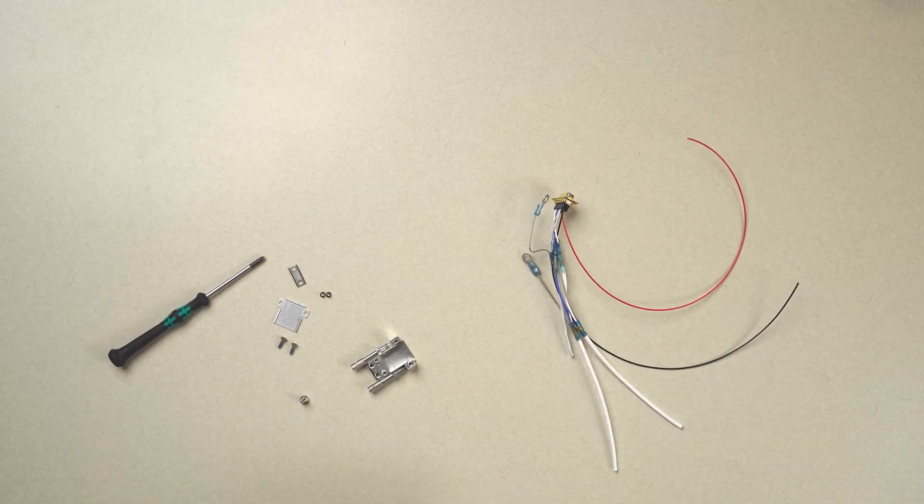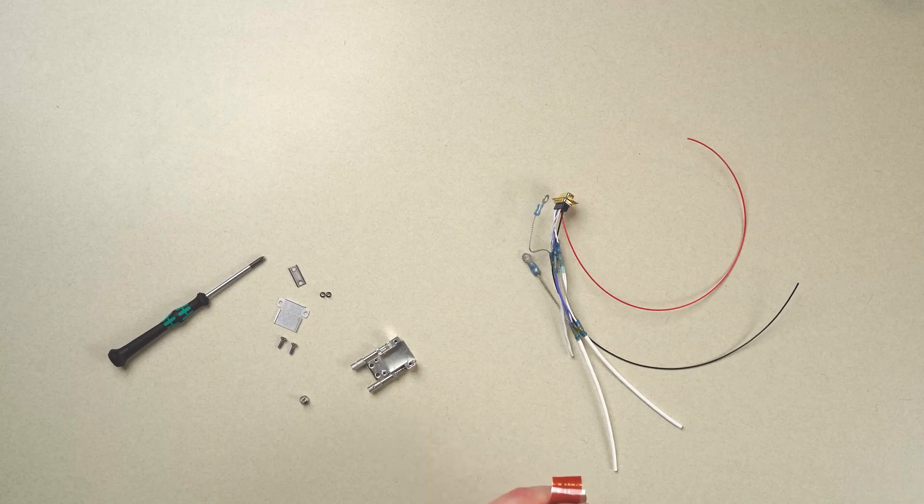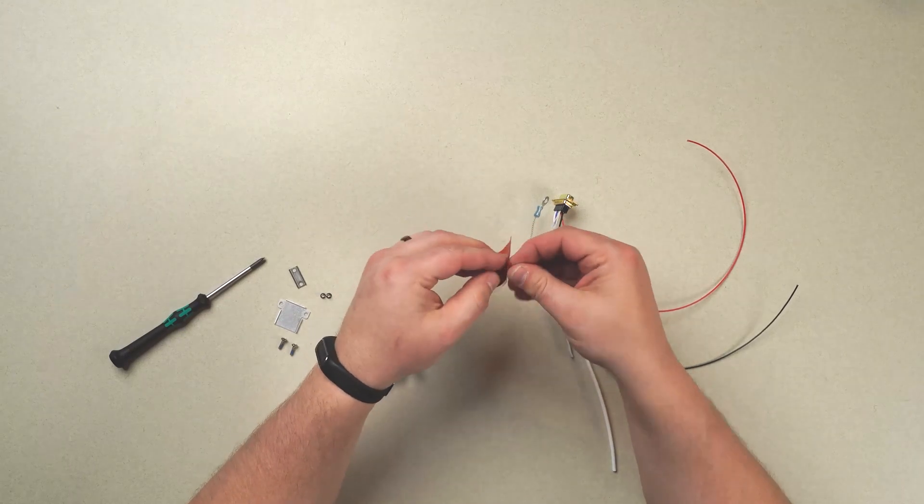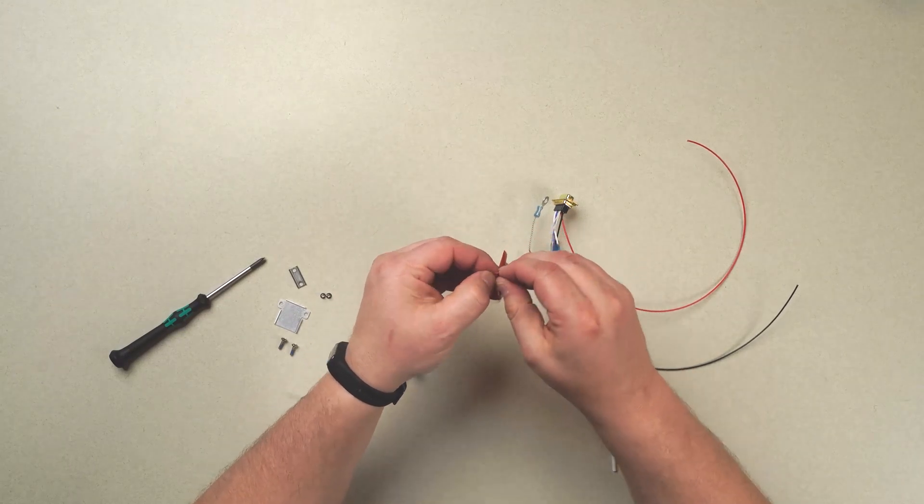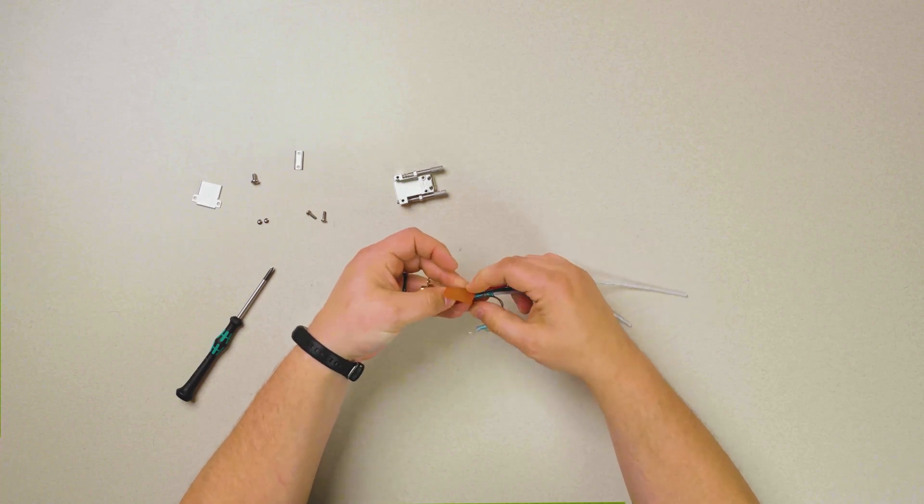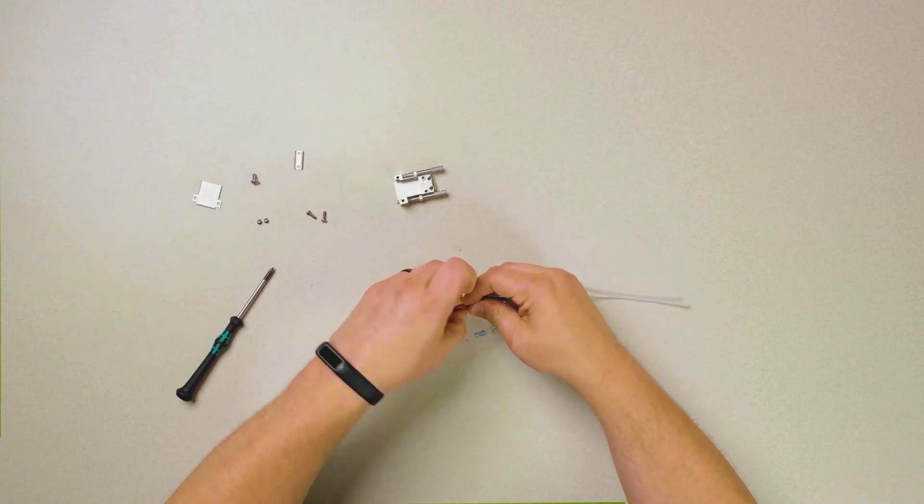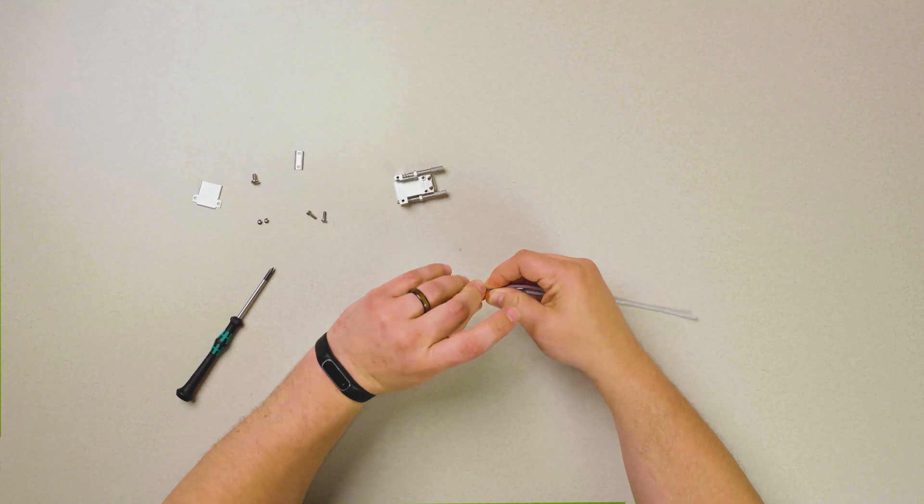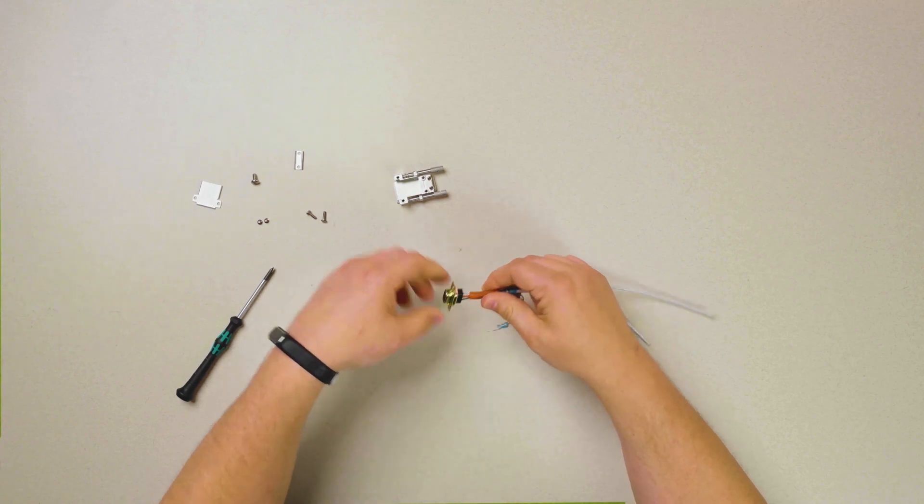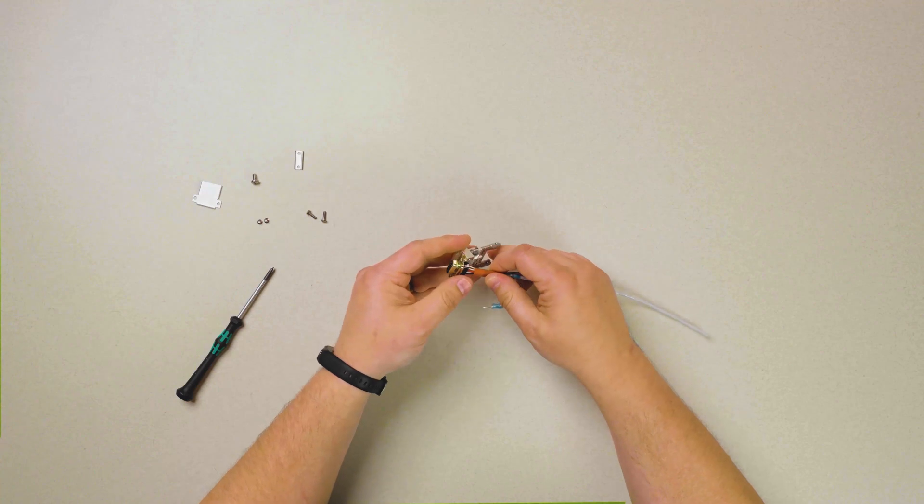We get ourselves a small length of some kind of chafe protection tape and wrap our merry little band of wires up where it's going to interact with the hold down of the back shell.